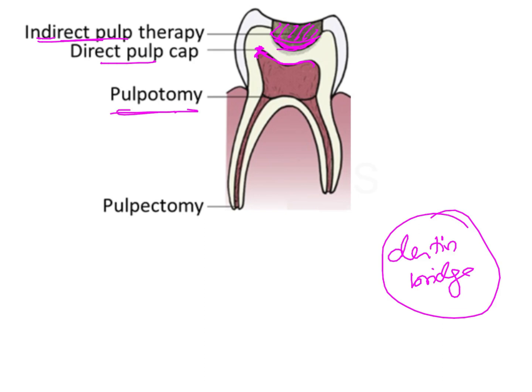In pulpotomy, we remove the coronal portion of the pulp which has been infected. When you open up the pulp cavity, you will see hemorrhage taking place, indicating the pulp tissue is infected and inflamed. But the radicular portion of the tooth may still be vital and non-inflamed. In those situations, we only remove the infected coronal pulp and maintain the radicular pulp so that root formation will continue. That is pulpotomy.